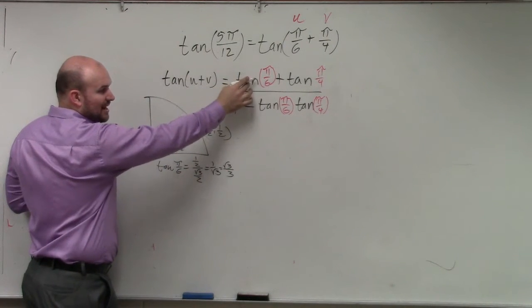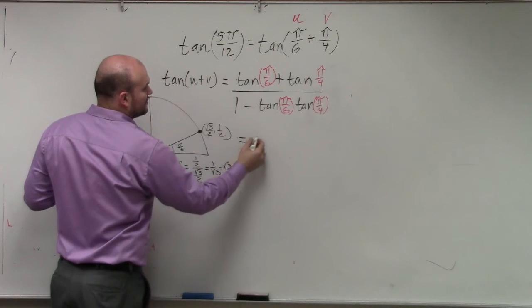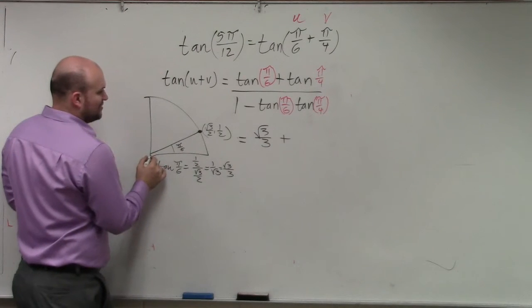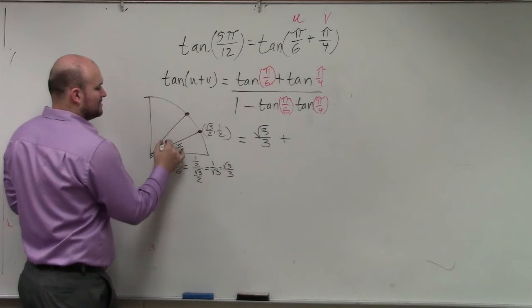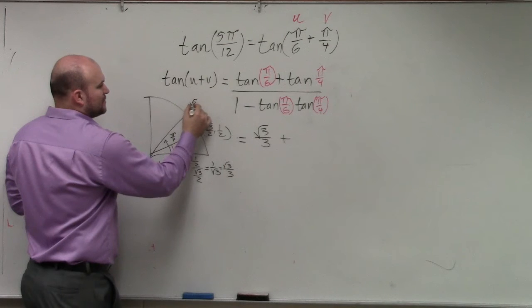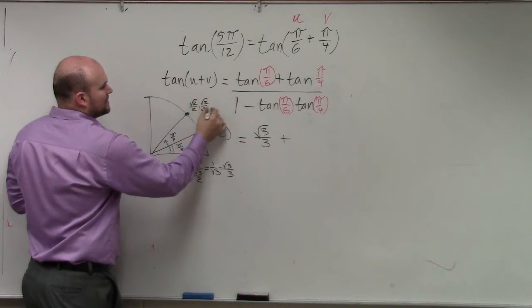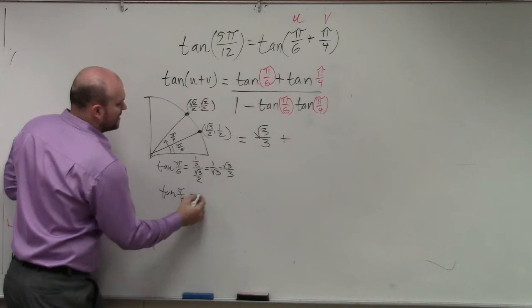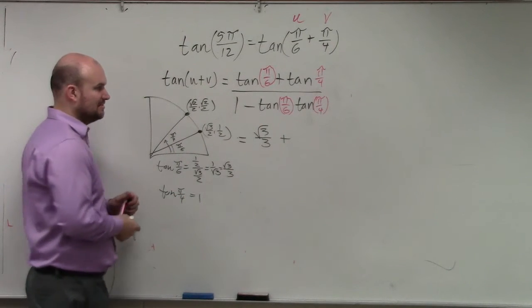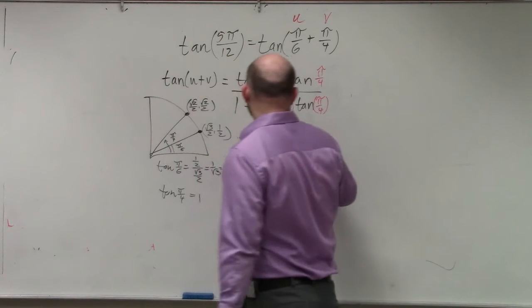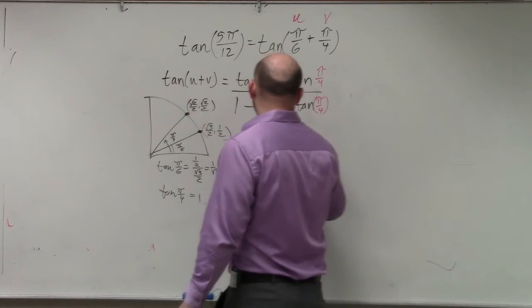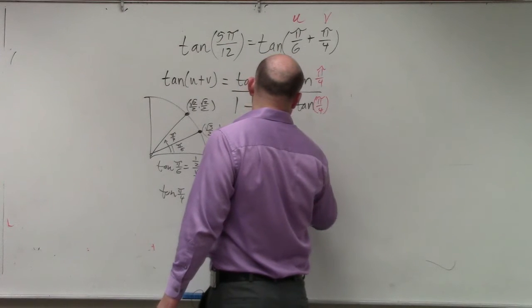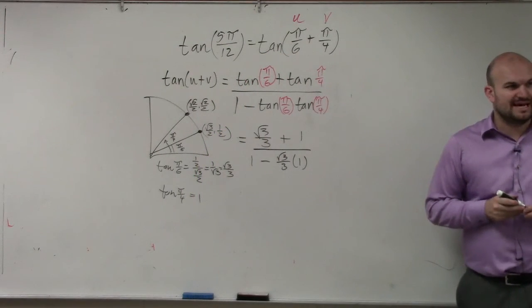So therefore, the tangent of π over 6 is equal to the square root of 3 over 3, plus the tangent of π over 4. π over 4 is right here. That point is square root of 2 over 2 comma square root of 2 over 2. So when I do the tangent of π over 4, do you guys see how that's 1? That's going to square root of 3 over 3 plus 1, all over 1 minus the square root of 3 over 3 times 1. Does everybody see that?